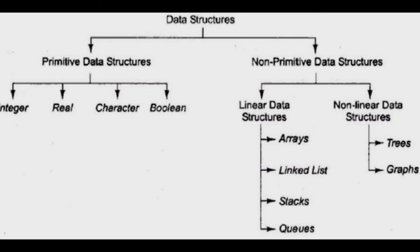Data structures are classified into two types: primitive data structures and non-primitive data structures. Primitive data structures mean built-in data types — predefined by various programming languages.